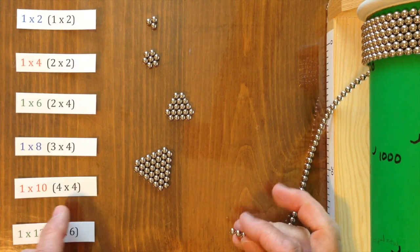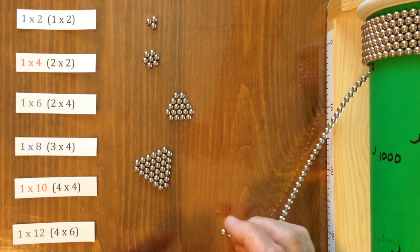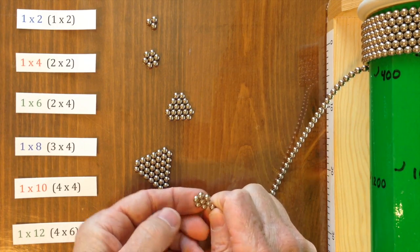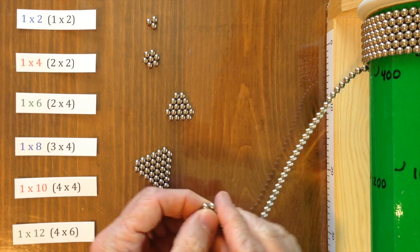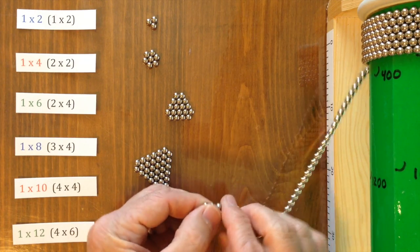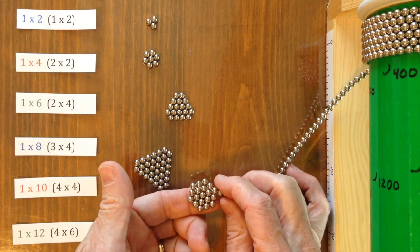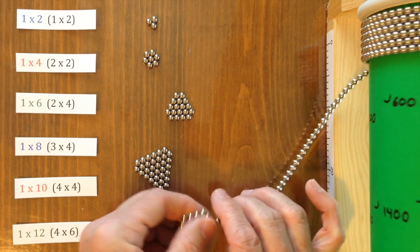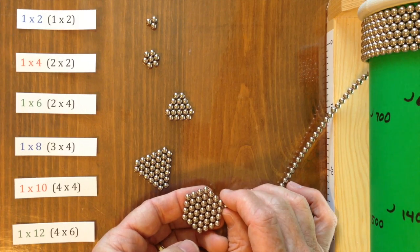We need a 1 by 10. And to make that, we'll need a 4 by 4. So start off with a 2 by 2. And then just add layers until you have a 4 by 4. There's one layer to make a 3 by 3.